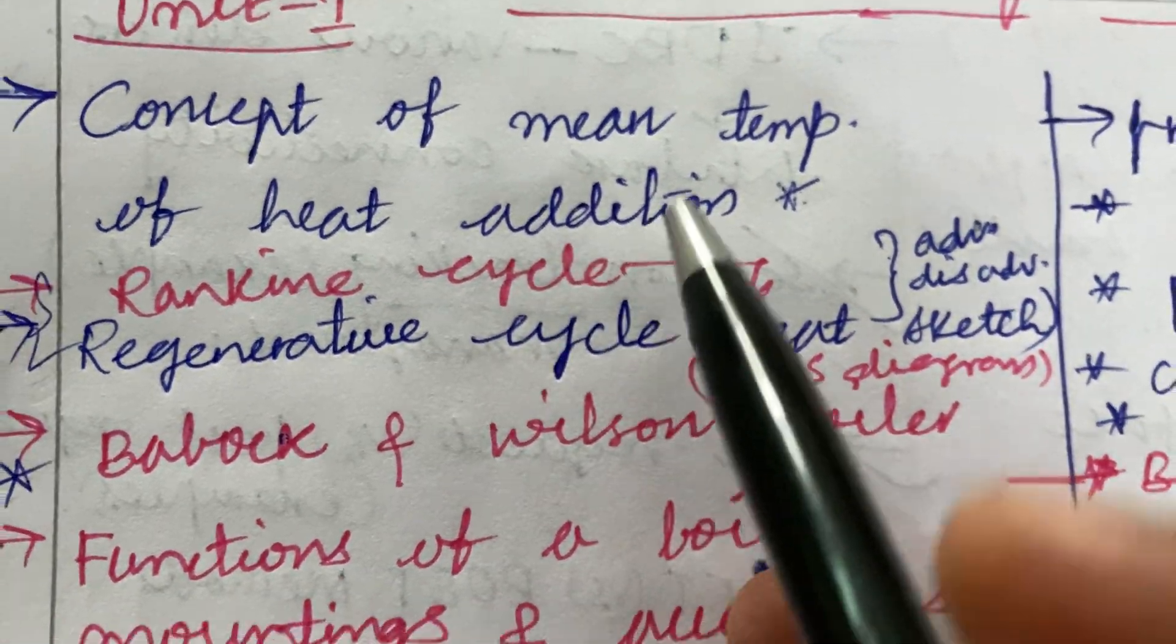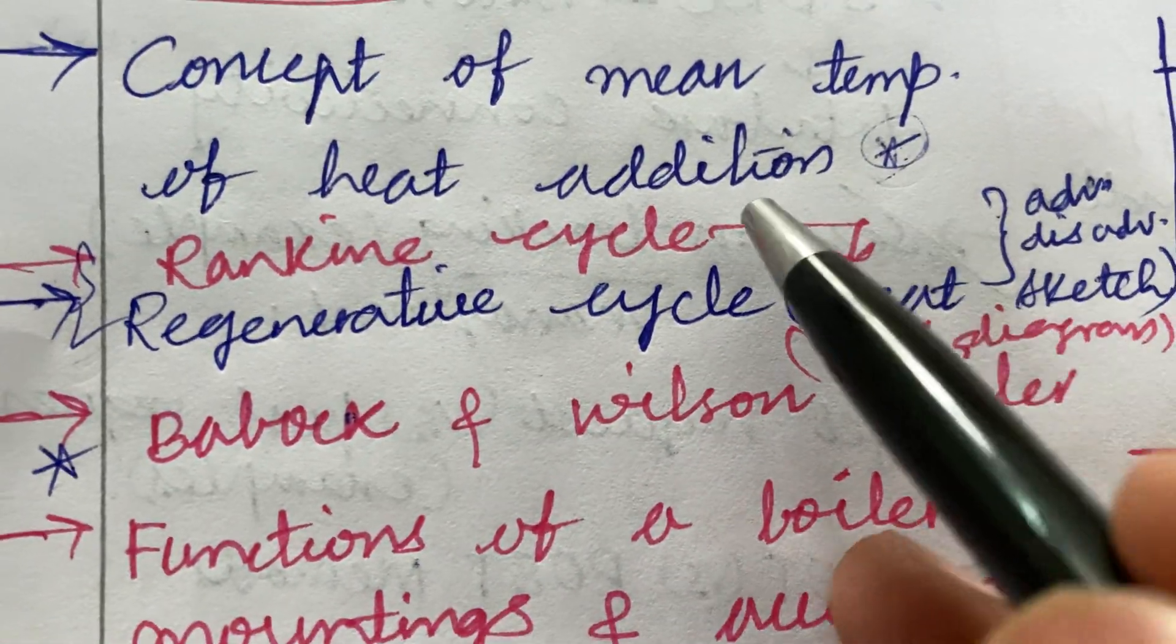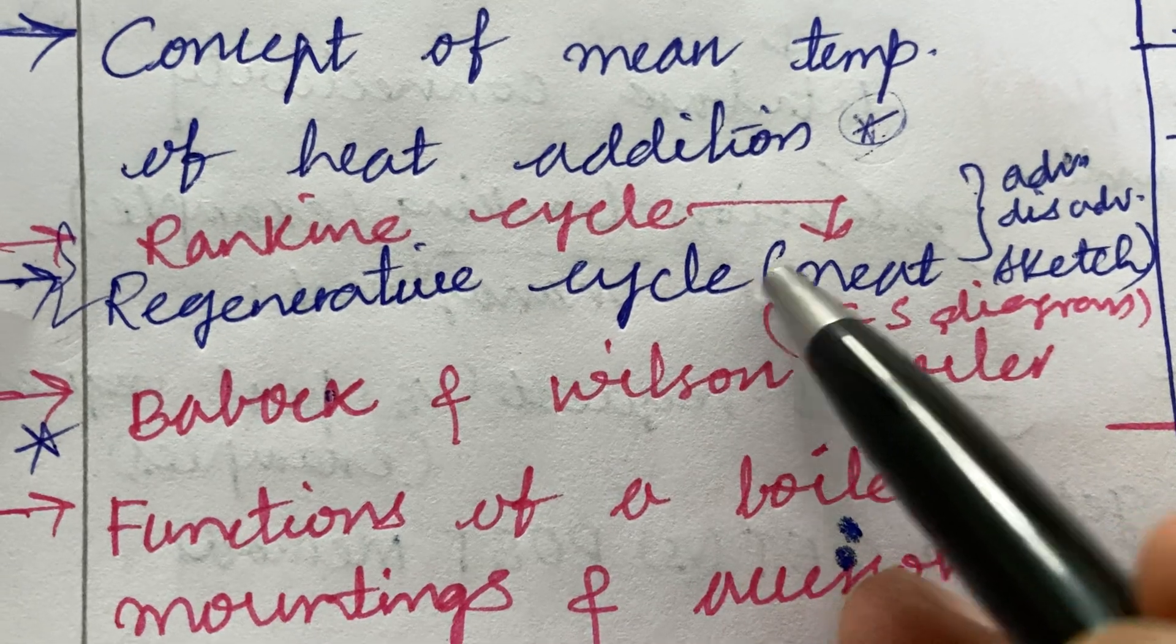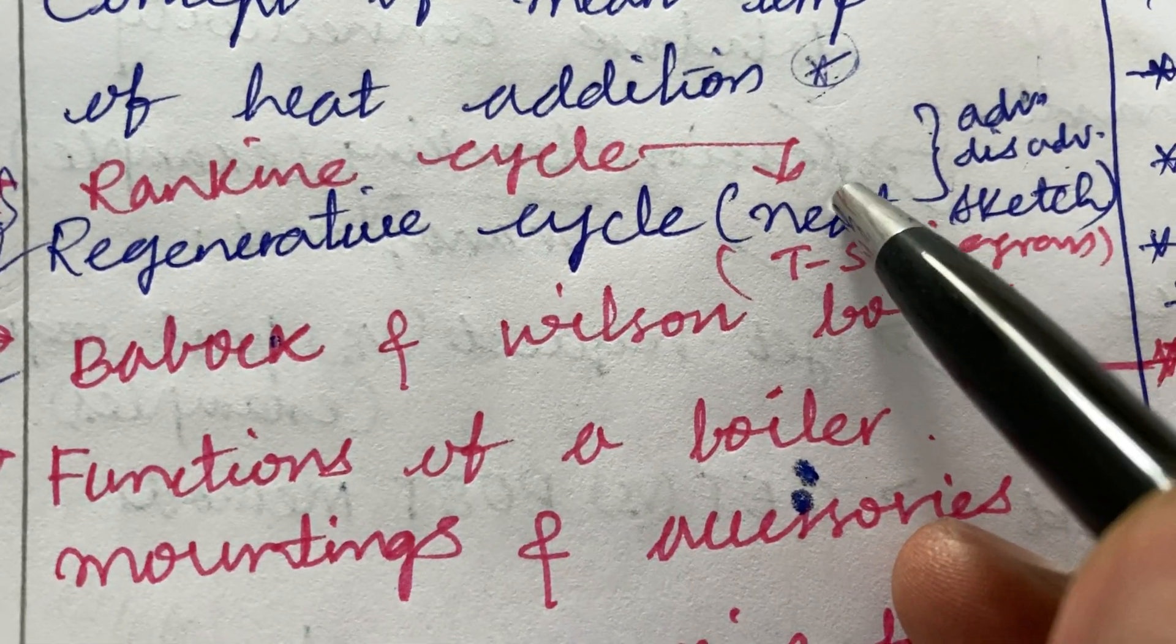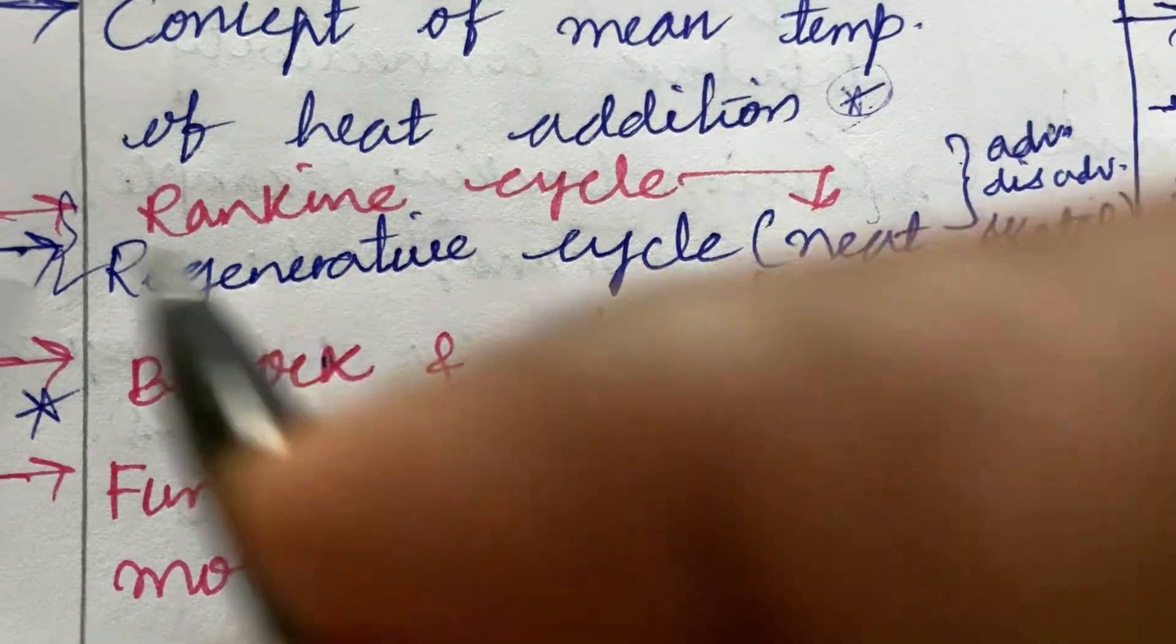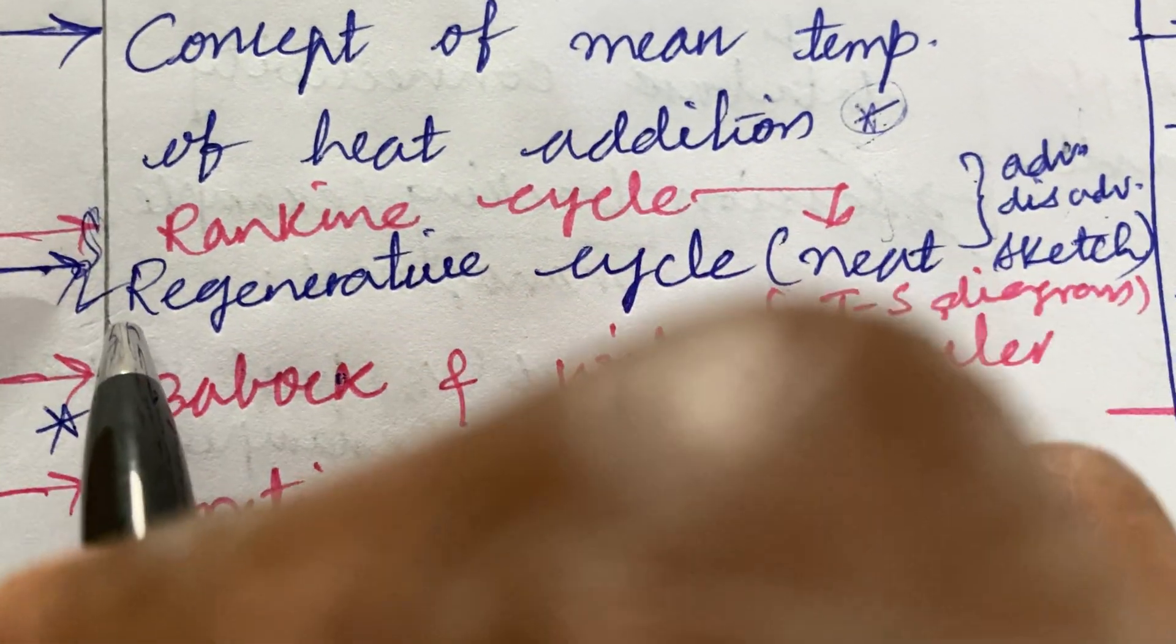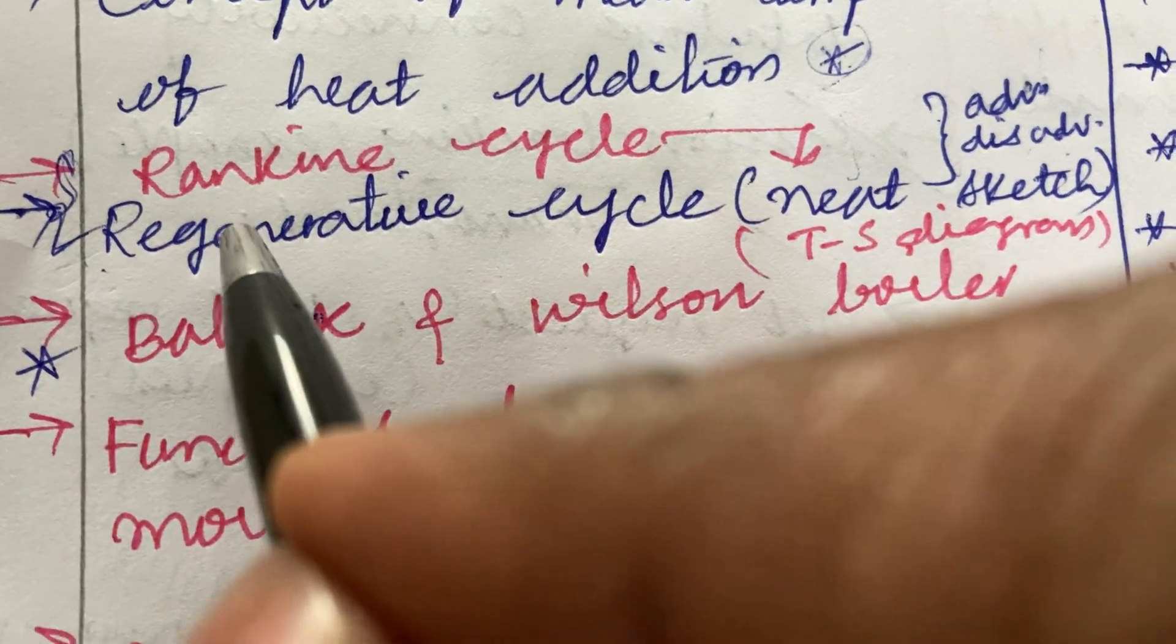The concept of mean temperature of heat addition is said to be a short question. The Rankine cycle and the regenerative cycle - their advantages and disadvantages along with a neat sketch. Sometimes they will be asking the differences and TS diagram is said to be a top most question. From these two cycles you will be getting one part for sure.